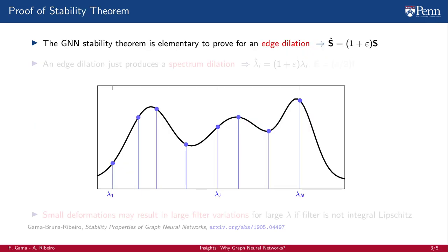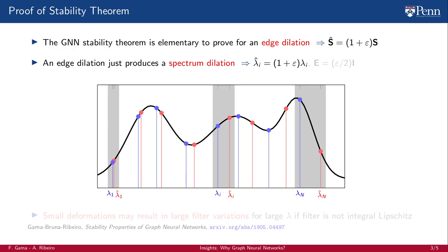The GNN stability theorem is elementary to prove for an edge dilation, that is, when we multiply edges by (1 + ε) for a small ε close to zero. Note that ε measures the size of the perturbation, so if it is small, the perturbation is small, and thus the output of a stable processing architecture shouldn't change much. The effect of an edge dilation is to produce a spectrum dilation where the eigenvalues of S in blue move to the eigenvalues of Ŝ in red. In solid black line we have the frequency response of a filter. This frequency response is Lipschitz but not integral Lipschitz, so we wouldn't expect this filter to be stable. Even if ε is small, the largest eigenvalue on the right can change a lot, causing a big change in the output of the filter. Thus, small deformations may result in large filter variations for large λ, and a Lipschitz filter is not stable.